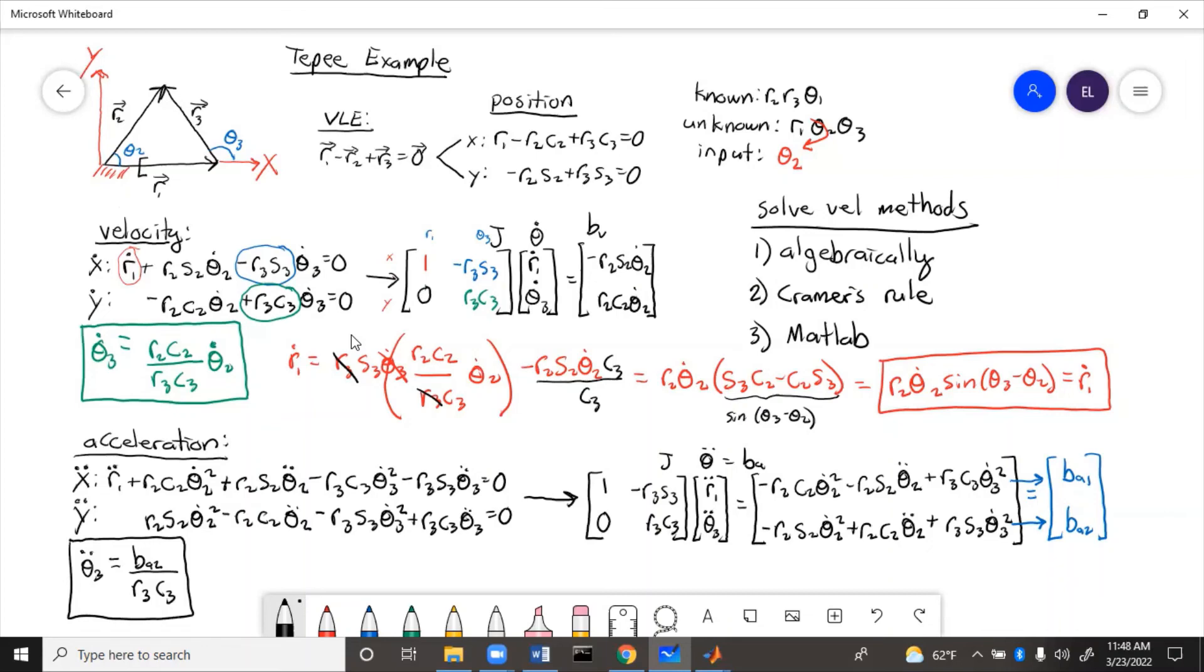We got that from the Y double dot equation and now the X double dot equation for R1 double dot. R1 double dot equals BA1 plus R3 S3 theta 3 double dot. But we need to actually substitute in.